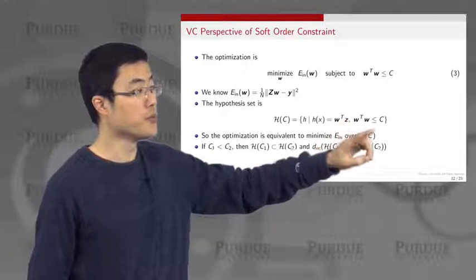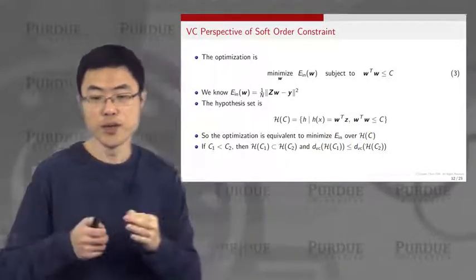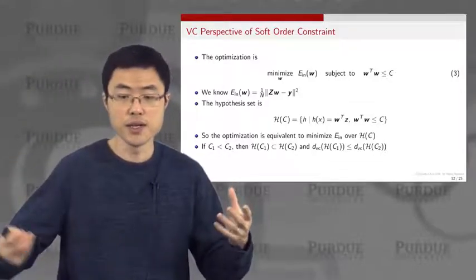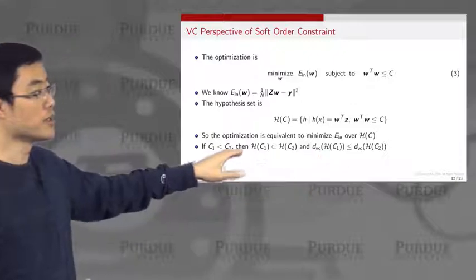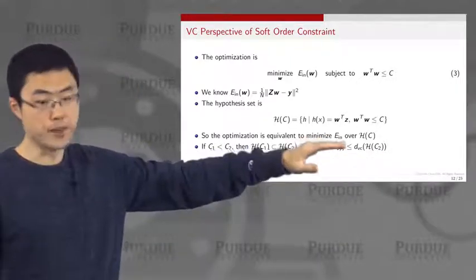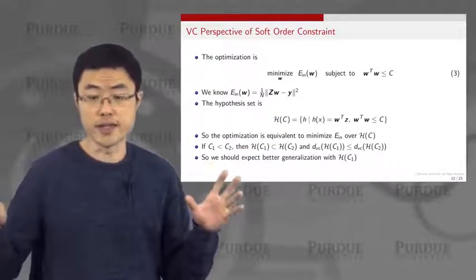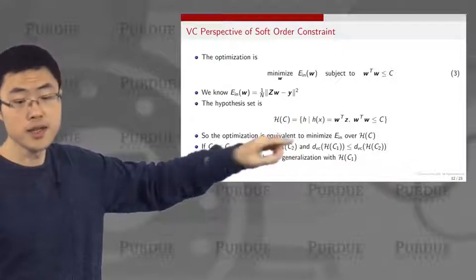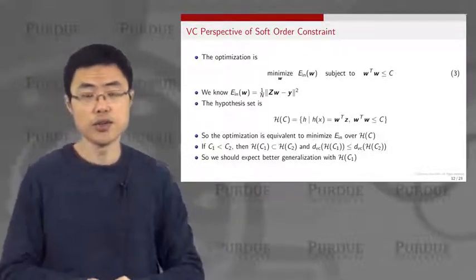When c1 is small, you have very little room to adjust the weights — you must choose very small w values. With a larger c2, you have more freedom. So H(c1) is a strict subset of H(c2), and the VC dimension follows the same inequality. By choosing any finite c — rather than the unconstrained case where c is infinity — you reduce the VC dimension of your hypothesis set, improving the generalization bound.